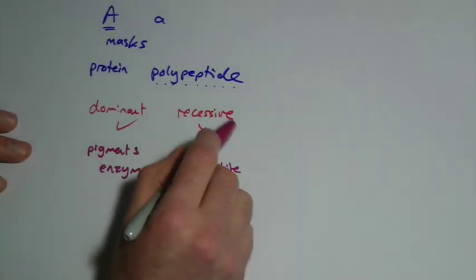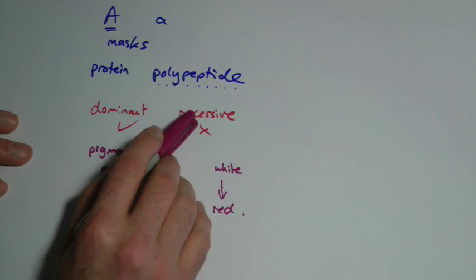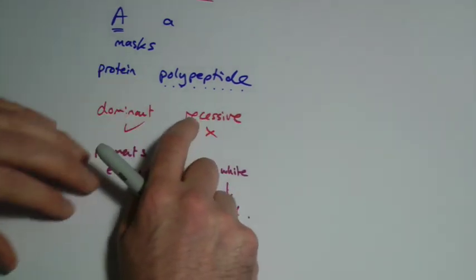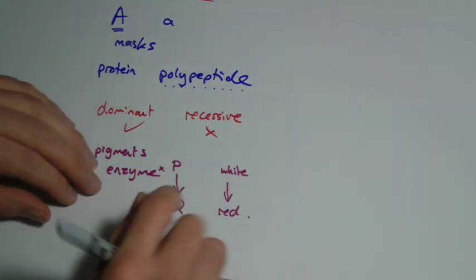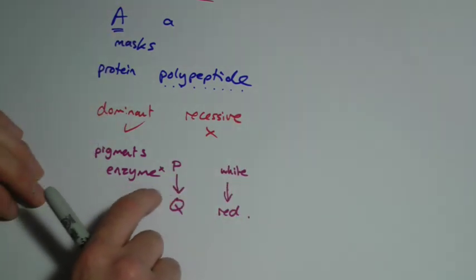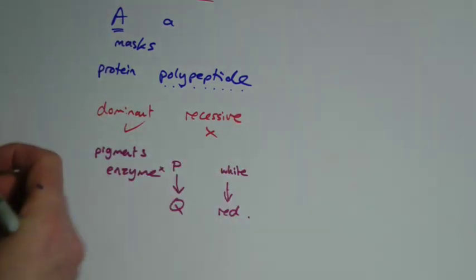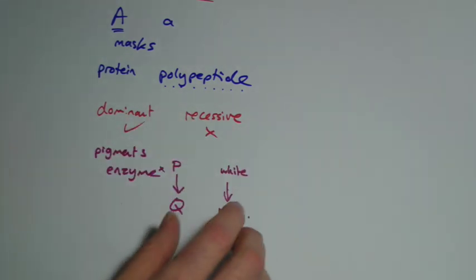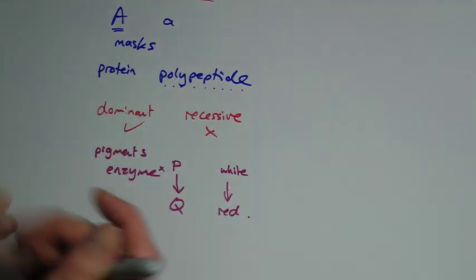This also helps if we're thinking about co-dominance, because sometimes what if the recessive allele works? Sorry, the recessive allele produces a protein that still works, but in a slightly different way. Well here, then we can get this idea of co-dominance of two things going. We can't really call it recessive because it still works. So we get both effects put together.